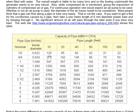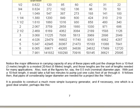Whereas an 8 inch nominal pipe will pump, in that same period of time, 7.98 of the same units, or with a 300 foot length, it will do 25,895 units. You notice the major difference in carrying capacity of any of these pipes, with just a change from a 10 foot, which is 3 meter length, to a modest 20 foot, 6 meter length. And those lengths are the sort of lengths needed for many applications. Also look at the figures for the half inch nominal diameter pipe. With just a 10 foot length, it would take a full two minutes to pump just one cubic foot of air through it. It follows then that pipes of considerably larger diameter are genuinely needed for a project like the hydro.